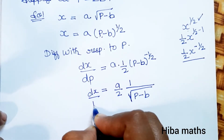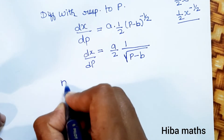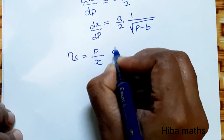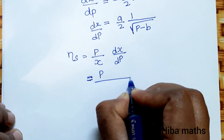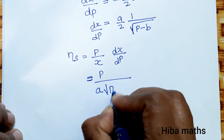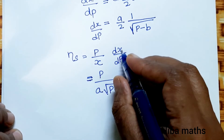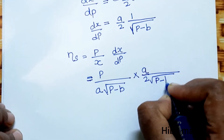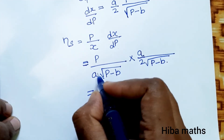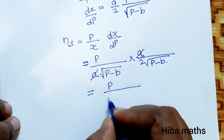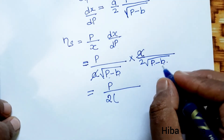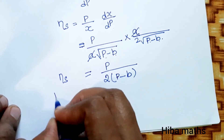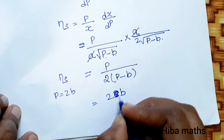The elasticity of supply, eta_s, equals p by x times dx by dp. Substituting x equal to a root of (p minus b) and dx by dp equal to a by 2 root of (p minus b), the a terms cancel, giving p divided by 2(p minus b).